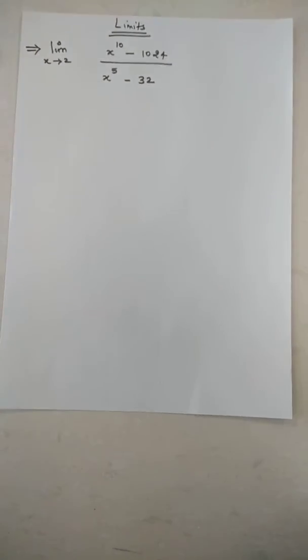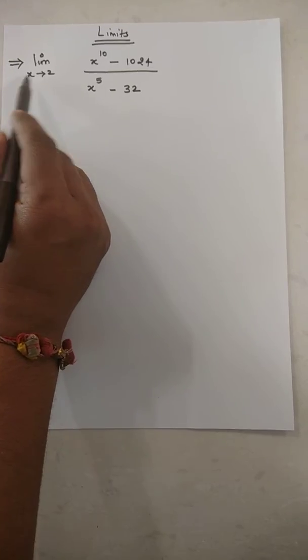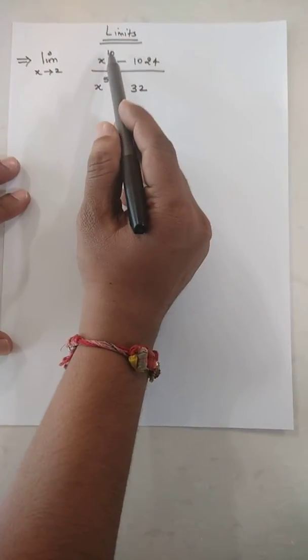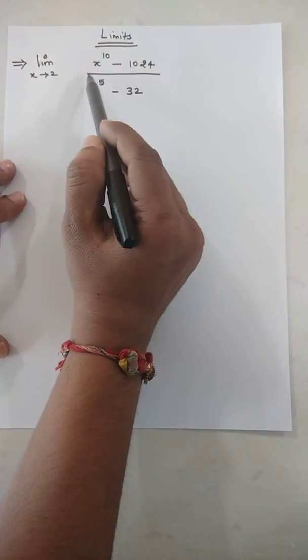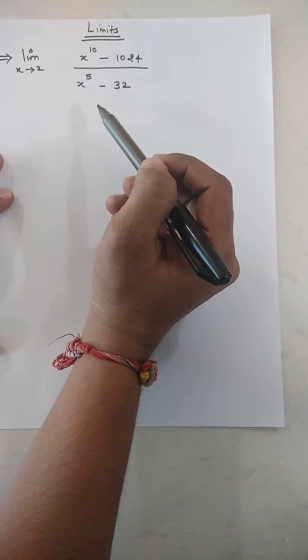Hello friends, today's topic is limits. So we have one question based on limits: limit as x tends to 2 of x raised to 10 minus 1024, and denominator x raised to 5 minus 32.